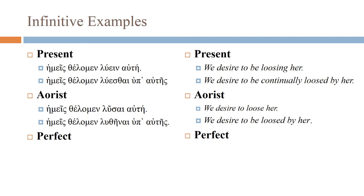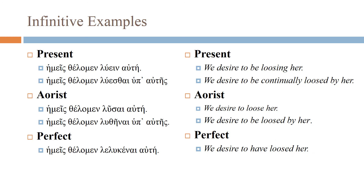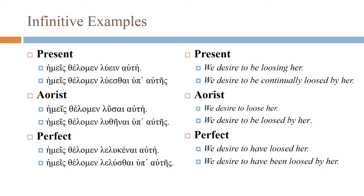The perfect infinitive: hēmeis thelomen lelukēnai autēn — 'we desire to have loosed her.' And hēmeis thelomen lelusthēnai hupo autēs — 'we desire to have been loosed by her' (passive). The lelusthe- is the perfect passive, and we recognize it because it has no connecting vowel — the perfect middle-passive does not have a connecting vowel.